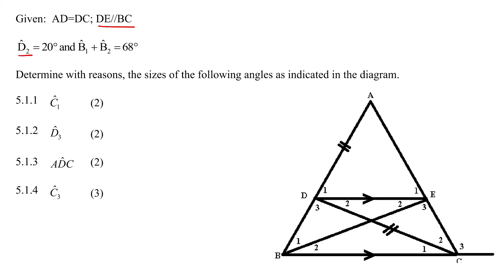And then they tell us that those two lines are parallel. We can see that. And then they tell us that D2 is 20, so D2 is 20. And then B1 plus B2 is 68. So this angle here is 68.